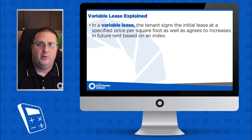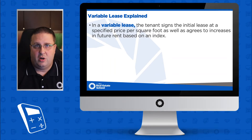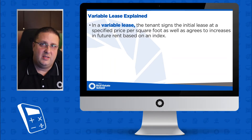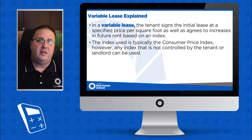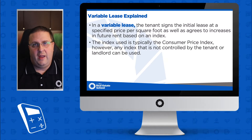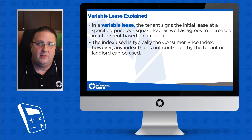What is a variable lease? In its simplest form, a tenant signs a lease with a fixed price per square foot to start, and then that tenant agrees that over time there will be certain adjustments based on a third-party index outside the control of the landlord and the tenant. Typically that's going to be the consumer price index.